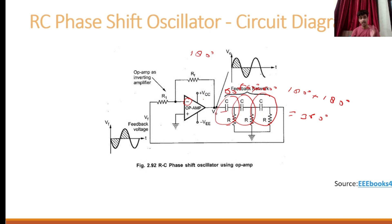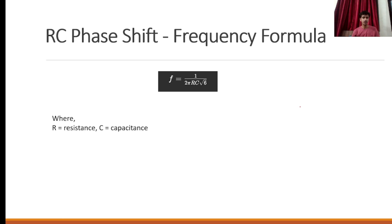A full cycle means it satisfies the Barkhausen criteria. The Barkhausen criteria states that whenever we have a signal at the input, the phase shift must be 0 degrees or 360 degrees. So it satisfies the condition, and we can say this is a perfect and sustained oscillator. The formula for the RC phase shift oscillator is: F = 1 / (2π RC √6), where R is resistance and C is capacitance.